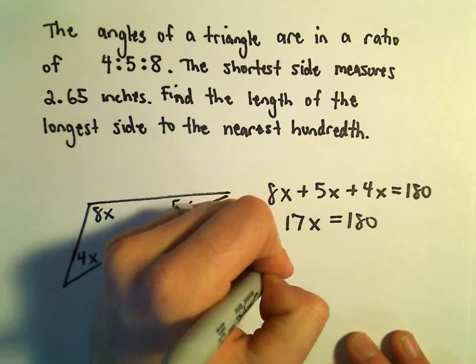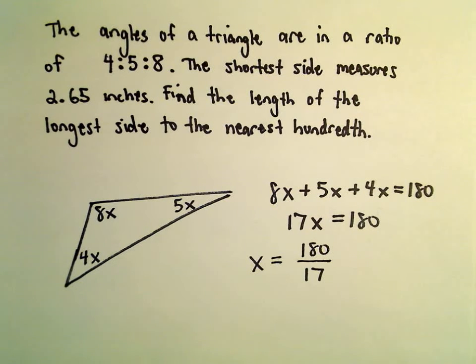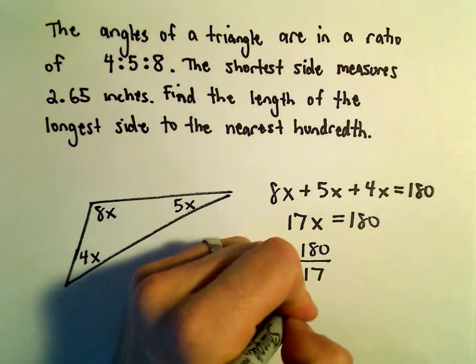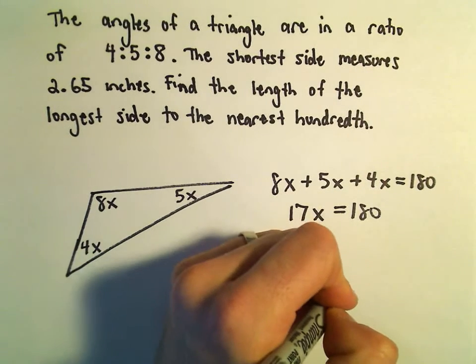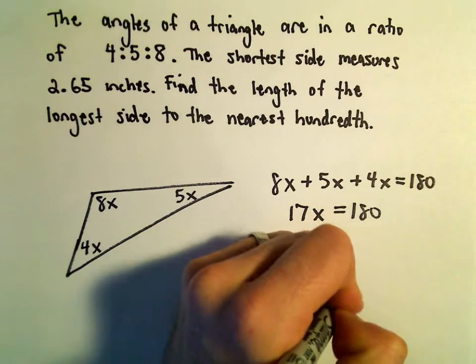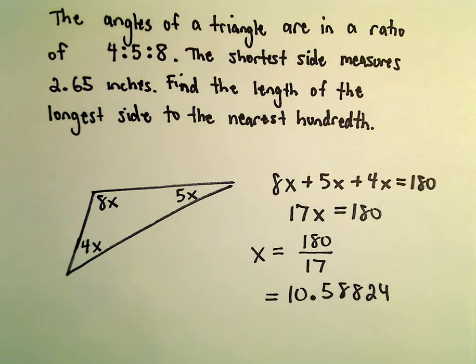So x is simply going to be 180 over 17. So let's see, 180 divided by 17. Since we want things to the nearest hundredth, I'm going to use more decimals versus less is all I'm going to say. Okay, so we're getting x to be 10.58824. So that's my value for x.